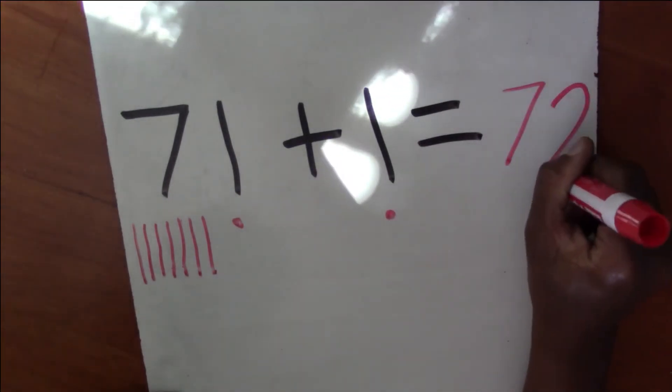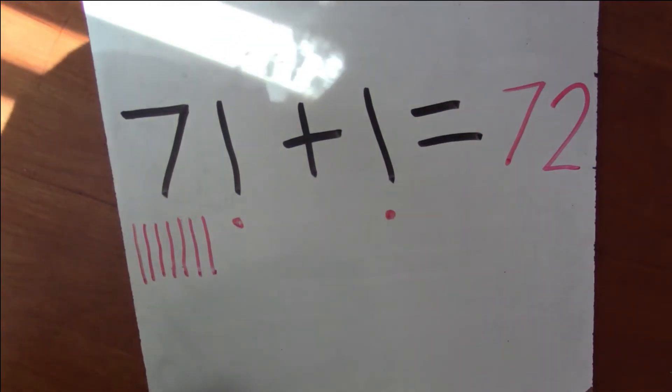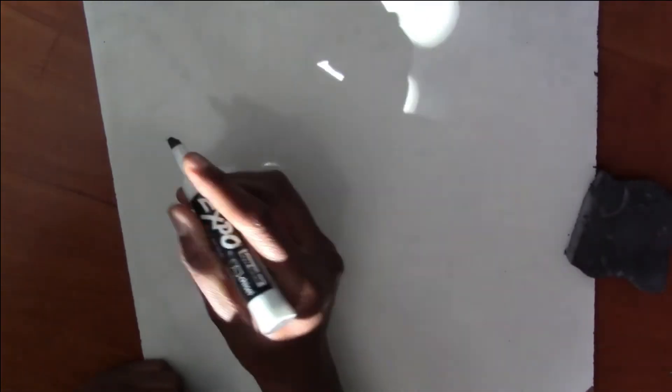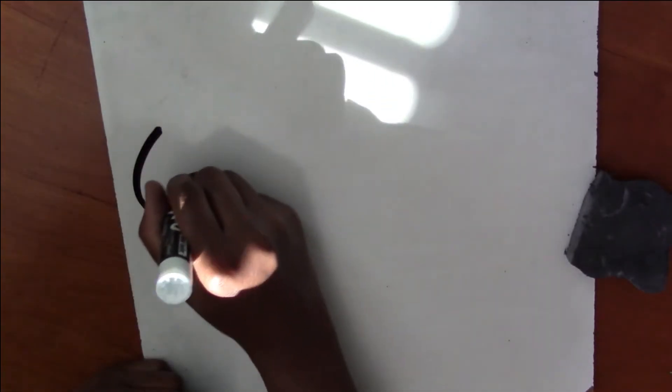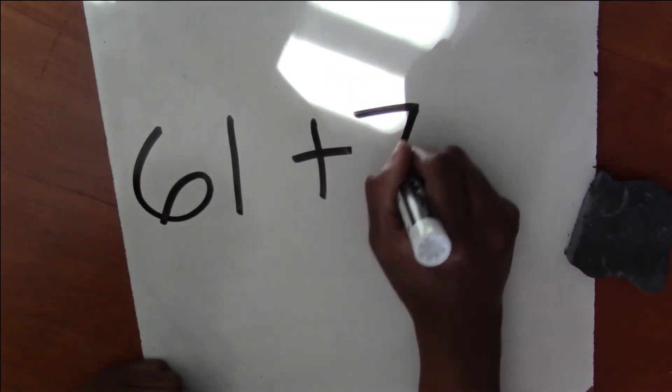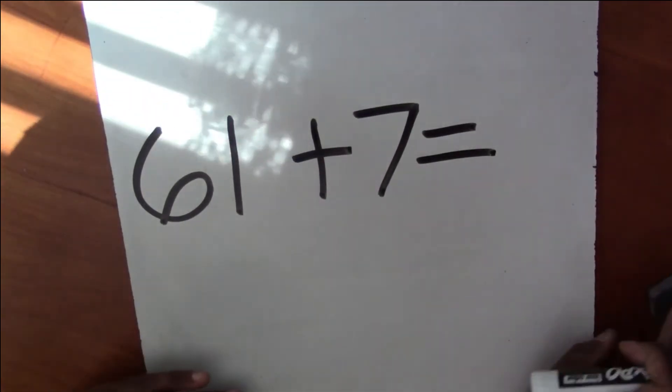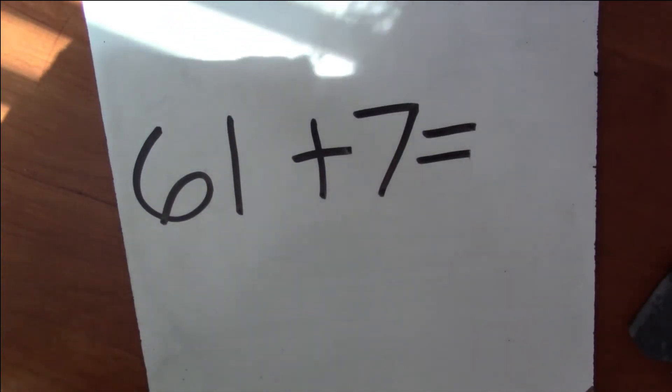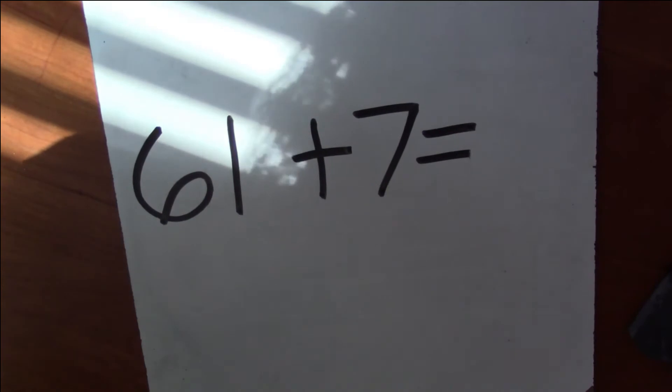I forgot to have you try this problem on your own. So I'm going to give you another problem that I'm going to have you try on your own. All right. So the problem I want you to try on your own is 61 plus seven. So remember, we're going to do the exact same thing. So I want you to go ahead and pause the video and try this problem on your own.